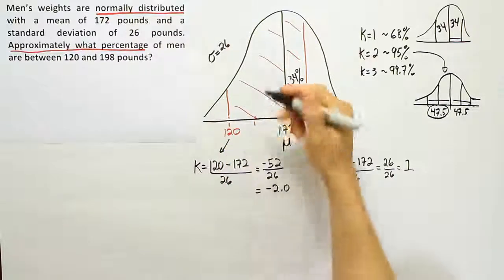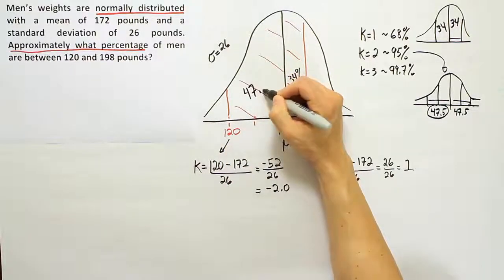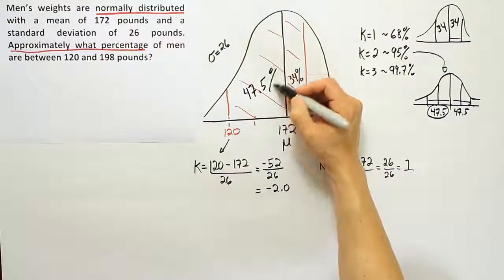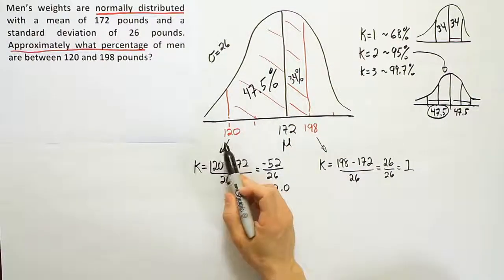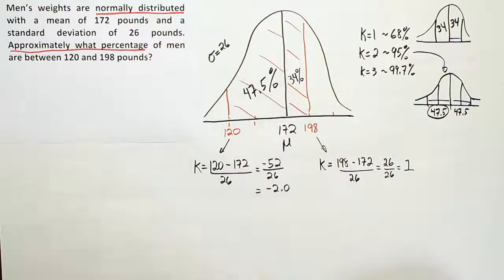Now to get the total area from 120 to 198, I'll have to add these two areas together. So that's my final solution to the problem.